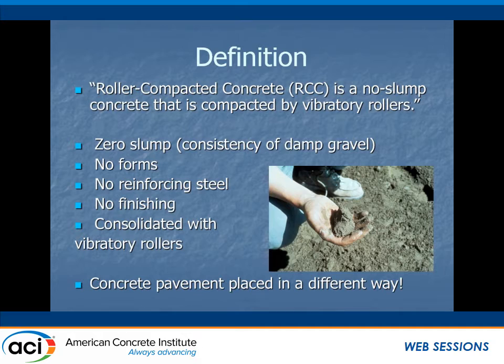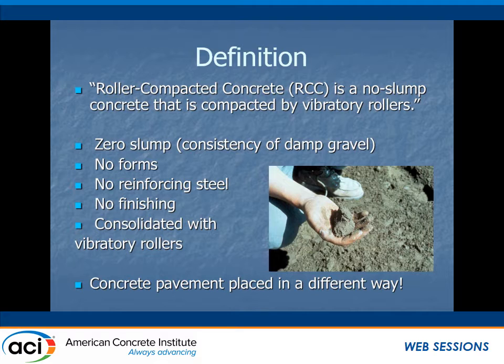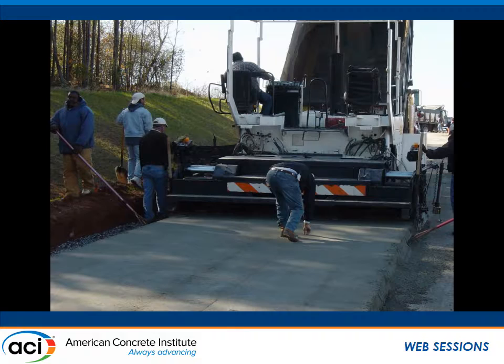An introduction and definitions: What is RCC? Roller compacted concrete is a no-slump concrete that's compacted by vibratory rollers, although our terminology gets us in trouble because we do have some where the paver itself provides sufficient compaction. It's a zero-slump concrete, and a lot of the elements involved in ordinary concrete pavement construction — forms, reinforcing steel, finishing — aren't there. So there are economics, but it is a type of concrete.